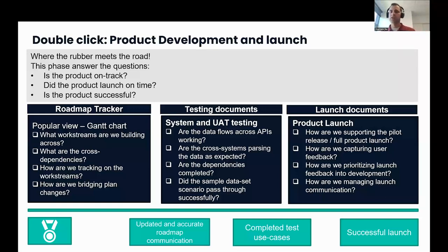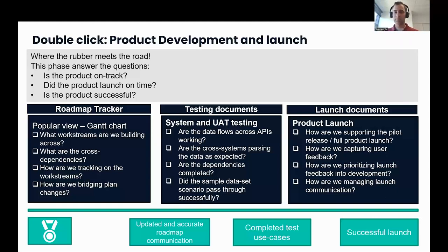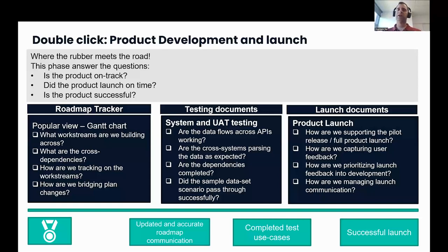Launch documents — the third pillar. Launch documents are all about how we're supporting this product launch. It's not just about the launch email communication, but also talking about how are we supporting the launch, how are we keeping a strong eye on the critical metrics of a launch, how are we capturing user feedback, and how are we quickly using that user feedback to prioritize and improve the product. What does success look like here? Success is an updated and accurate roadmap communication that facilitates discussion around roadmap changes and how to bring it back on track. For testing, it's completed test use cases that actually surface real problems. From a launch perspective, obviously it's a successful launch — but also how user feedback is being integrated into the development of V1 becomes very, very critical.